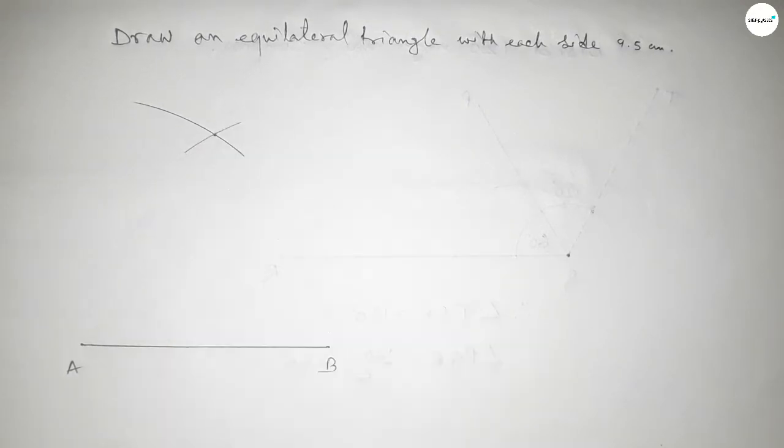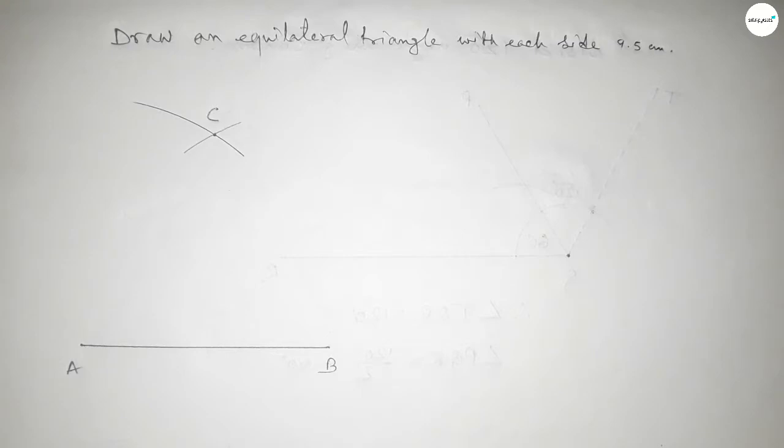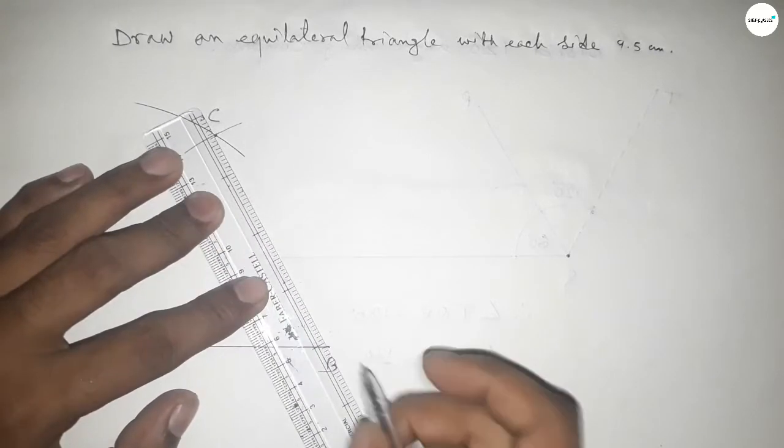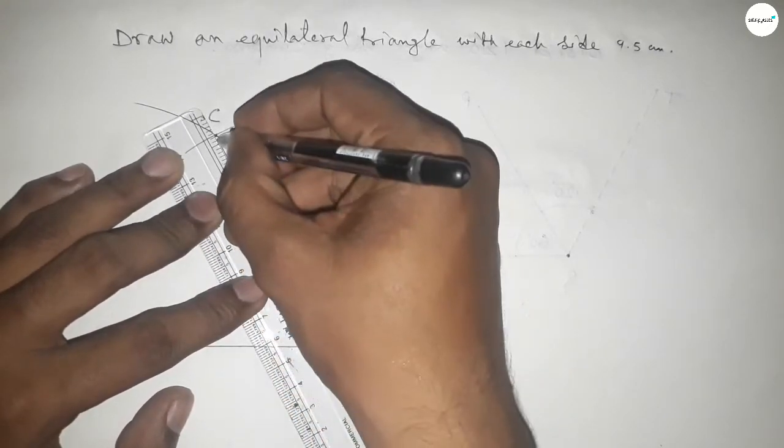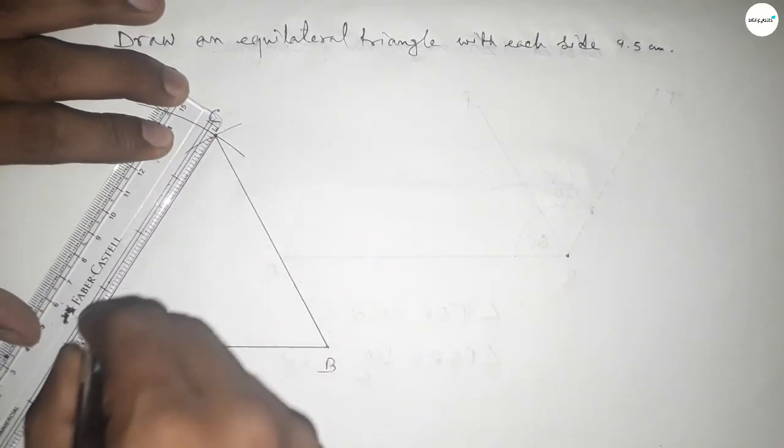And this is point C. Now joining this side and joining this side to get an equilateral triangle with each side 9.5 centimeter.